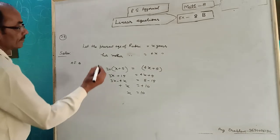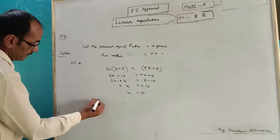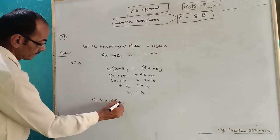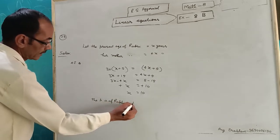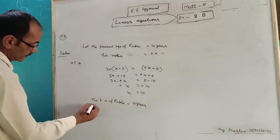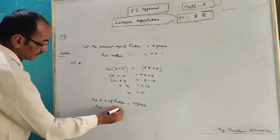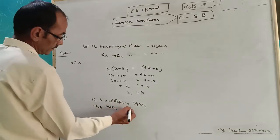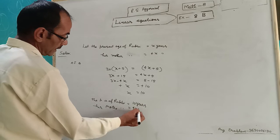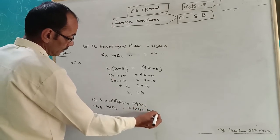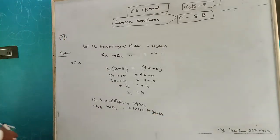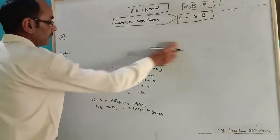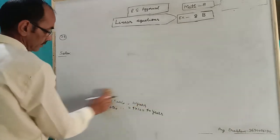What is the x? x is Rocky's age. The present age of Rocky is equal to 10 years. Her mother's age will be 4 into 10 is equal to 40 years. Question 23 is complete.